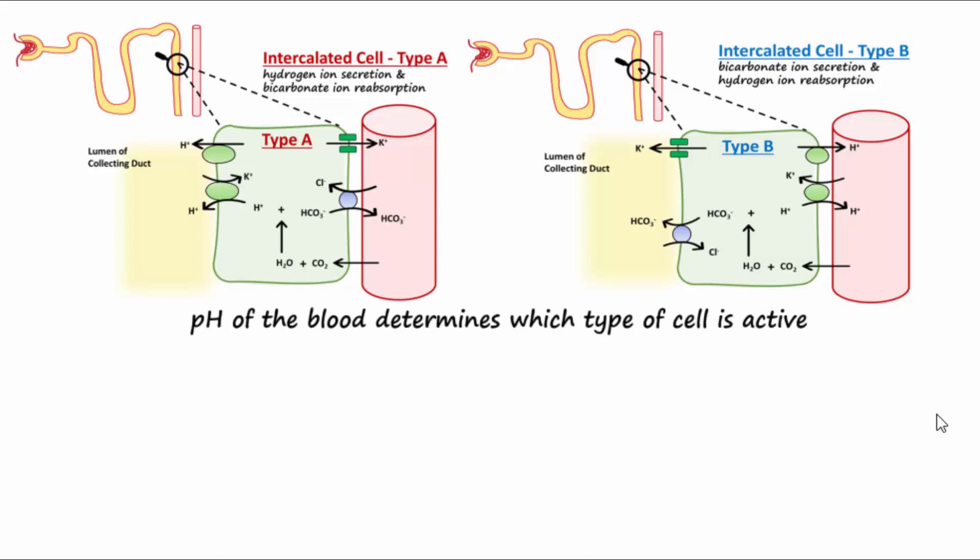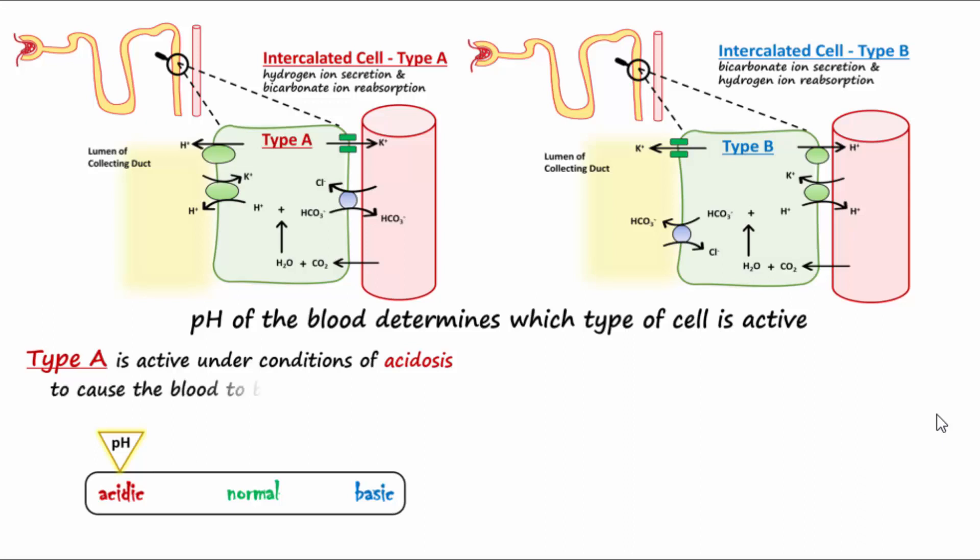In conditions of acidosis, the type A cells that secrete hydrogen ions into the lumen of the nephron are active to cause the blood to become more basic.